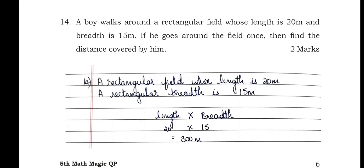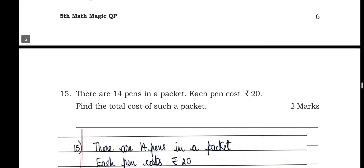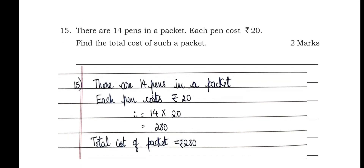Question 14: a boy walks around a rectangular field whose length is 20 m and breadth is 15 m. If he goes around the field once, find the distance covered. Using length × breadth: 20 × 15 = 300 meters is the answer.